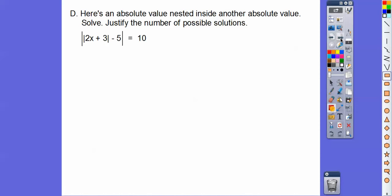Here's an absolute value that's nested inside another absolute value. Let's go ahead and solve. Let's just deal with this big absolute value equals 10. So we're going to say it equals plus or minus 10 right there. Now we'll add 5 to both sides. Here we have an absolute value equals a negative number. This one's no solution, but this one we're going to make it equal to plus or minus 15 right there.